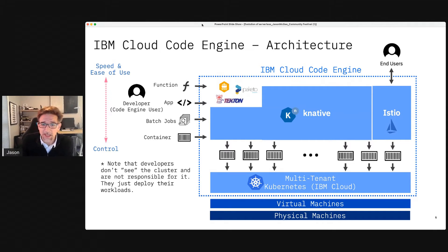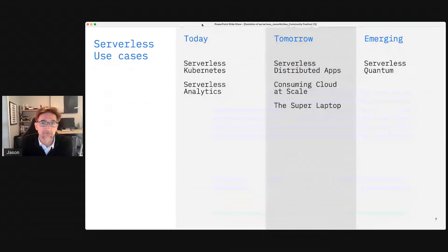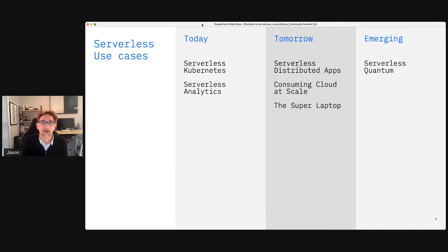The examples I'm going to walk through of new things happening in the serverless space are rooted in open source technologies but are available in IBM Cloud through systems like Code Engine. Let's talk through six new things that are happening in the serverless space in this serverless 2.0 era.